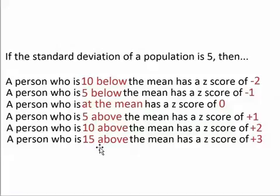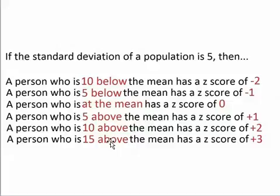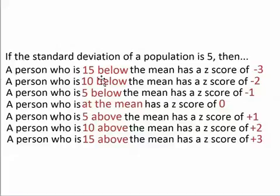A student who is 15 above the mean would have a z-score of plus 3, because that student would be three standard deviations above the mean. If you start at the mean and you go up by 5, you go up by 5, and you go up by 5 again, then you've reached this student right here who is three standard deviations above the mean. A student with an exam score of 15 below the mean would have a z-score of minus 3 because this student is three standard deviations below the mean.